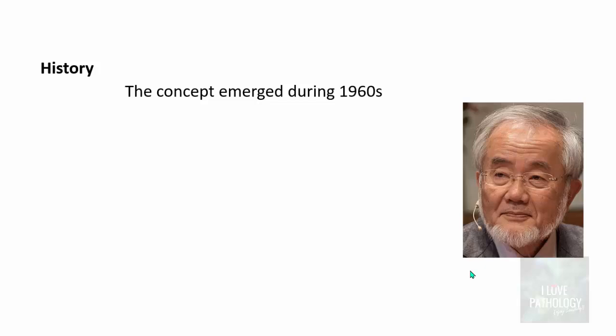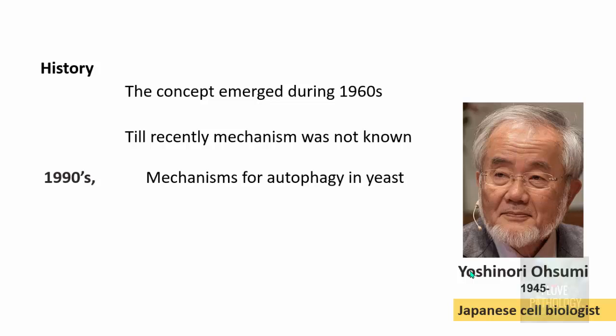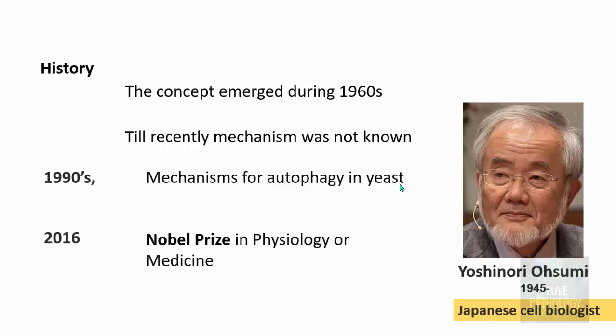Let us see some historical aspects of autophagy. This concept emerged during the 1960s. Till recently, the mechanism of autophagy was not known at all — it was just observed that the cell used to eat its own self. The mechanism was not known until the 1990s, when Japanese cell biologist Yoshinori Ohsumi demonstrated the mechanisms of autophagy in yeast and then went on to demonstrate the similar mechanism even in humans. For this reason, in 2016, the Nobel Prize in Physiology and Medicine was given to Yoshinori Ohsumi for demonstrating the mechanisms of autophagy.